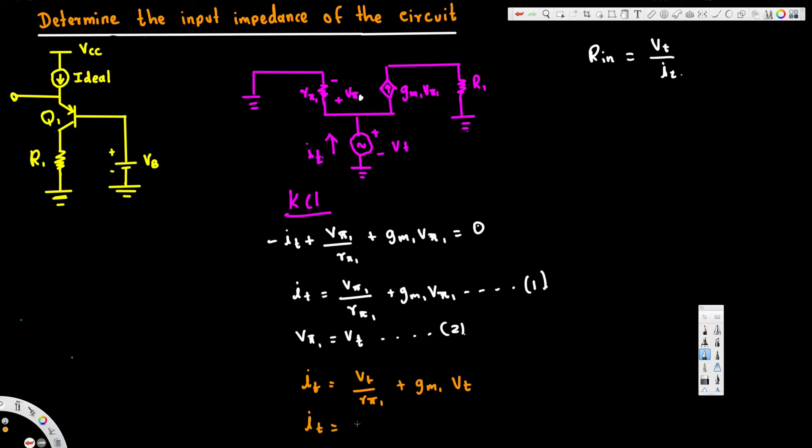So it is equal to 1 over r51 plus gm1, times vt common. And then let's continue here. Therefore, vt over it is going to be equivalent to 1 over (1 over r51 plus gm1).